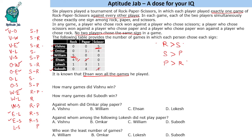Now for Lokesh: one game is given where Lokesh plays scissors. In the game against Subod, since Subod plays paper, Lokesh must play rock — he cannot play paper in that game. The remaining games for Lokesh are all paper. So Lokesh plays scissors in one game, rock in one game, and paper in the remaining three.